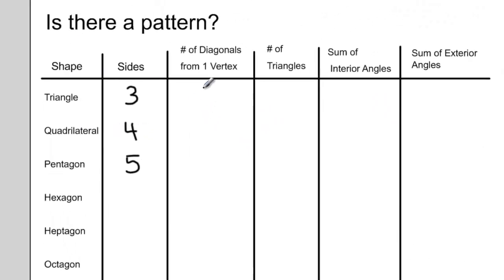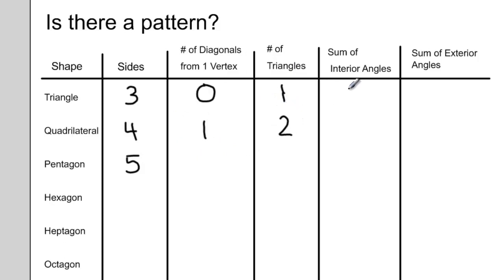So for triangles, I can draw zero diagonals from the vertex. For quadrilaterals, I can draw one diagonal. And I make one and two triangles respectively from each of these shapes, creating interior angles that sum to 180 degrees in the case of the triangle and 360 degrees in the case of the quadrilateral.